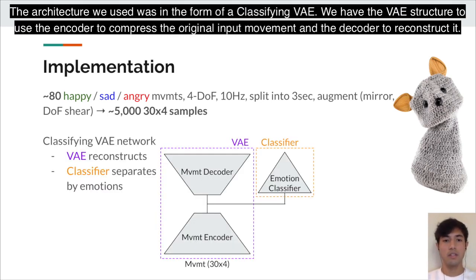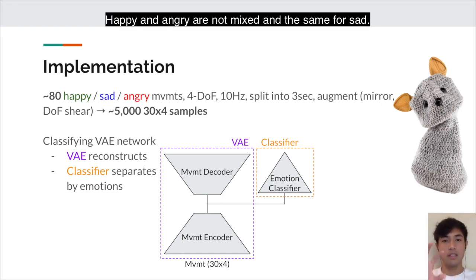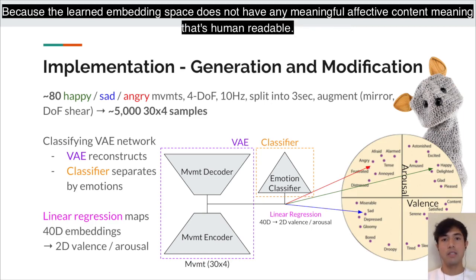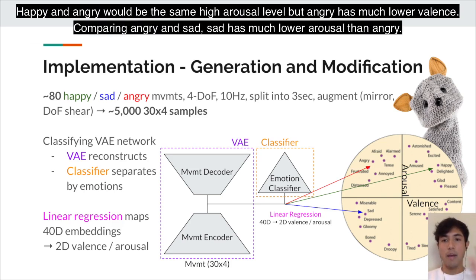The architecture we use is a classifying VAE. We use the encoder to compress the original input movement and then decode it to reconstruct it. We add an additional classifier operating on the embedding space to ensure each emotion class is separated — happy and angry are not mixed, and same with sad. We then use linear regression to map from the 40-dimensional embedding space down to 2D valence-arousal space, since the learned embedding space does not have human-readable affective content. We map onto the circumflex model of emotions: happy and angry share high arousal but angry has much lower valence, while sad has much lower arousal than angry.